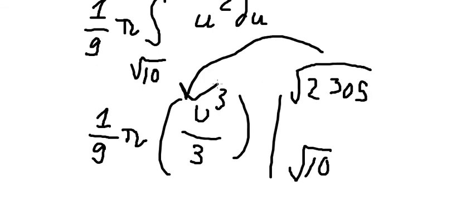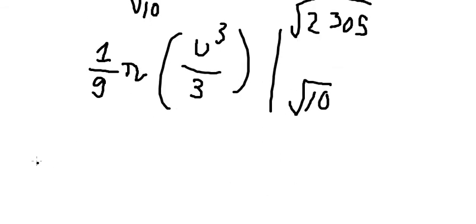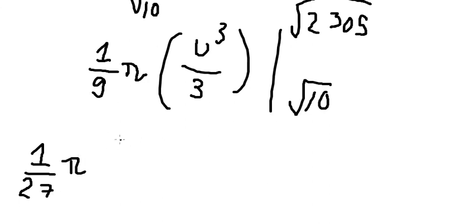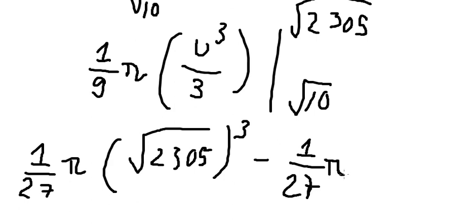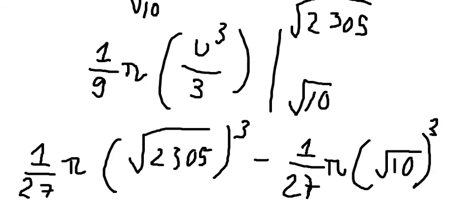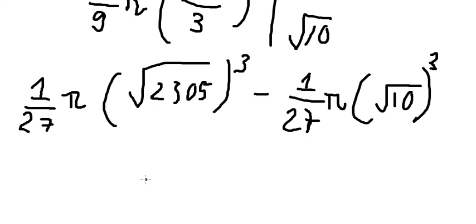We evaluate the integral. Substituting the bounds and simplifying — 3 times 9 gives 27 in the denominator. We calculate the final numerical result, which is approximately 12,872.